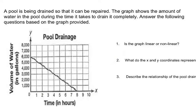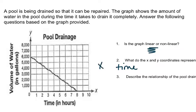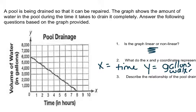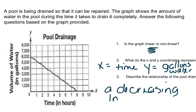One more — let's describe the relationship for pool drainage. A pool is being drained so that it can be repaired. The graph shows the amount of water in the pool during the time it takes to drain it completely. The first question: is it linear or non-linear? When I really look at it, it is a steady linear straight line. The x-axis is the time it's taking to drain it, and the y-axis is the amount of gallons of water left in the pool. The relationship of the pool drainage is a decreasing linear function.